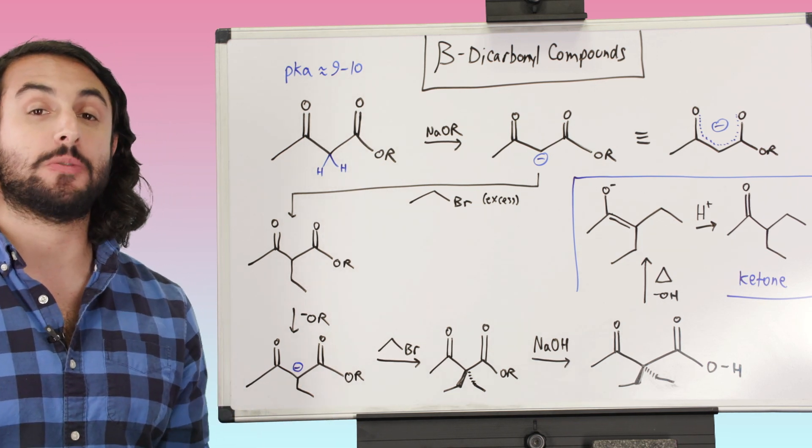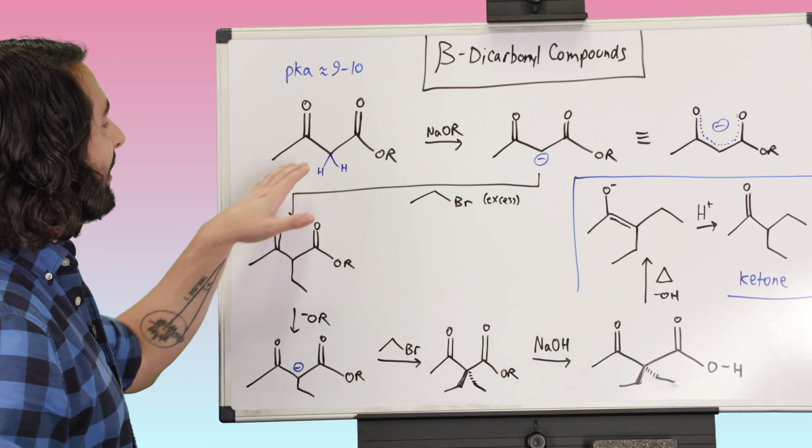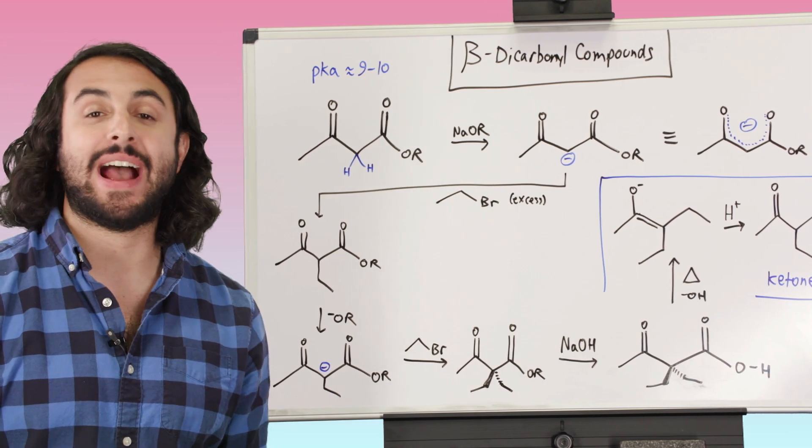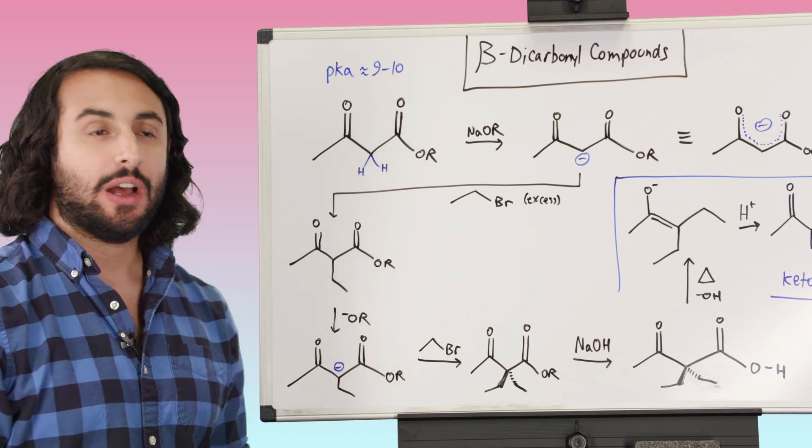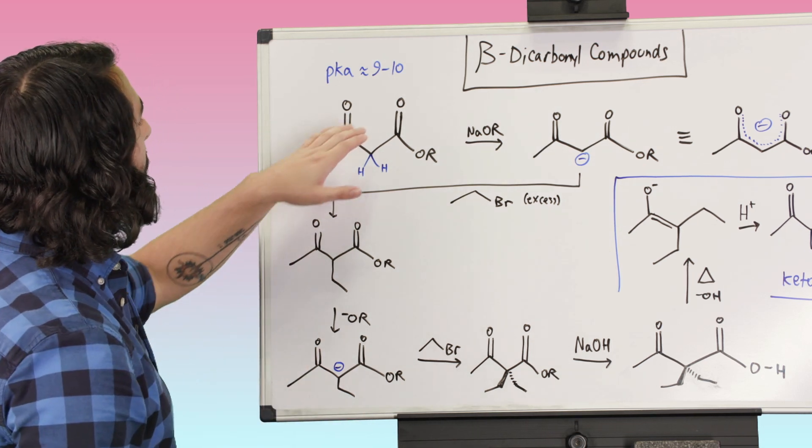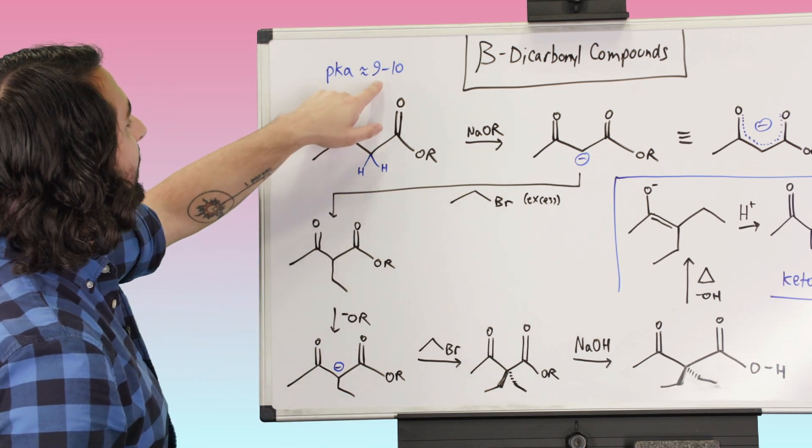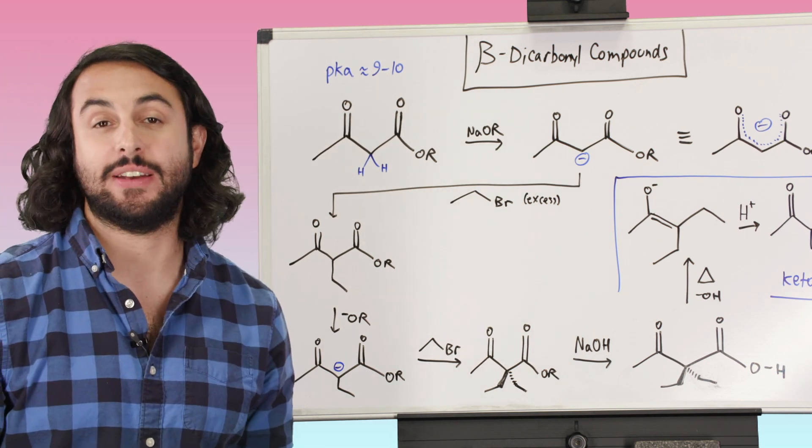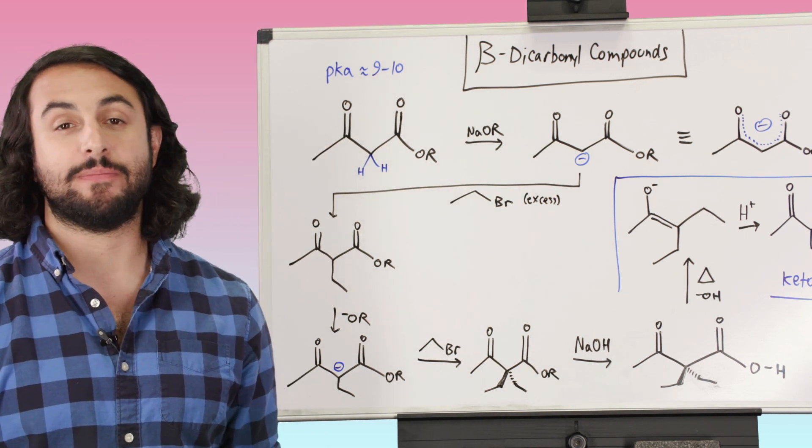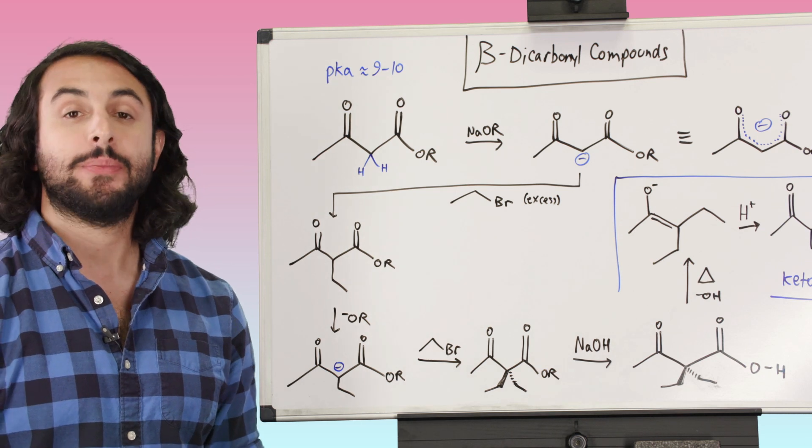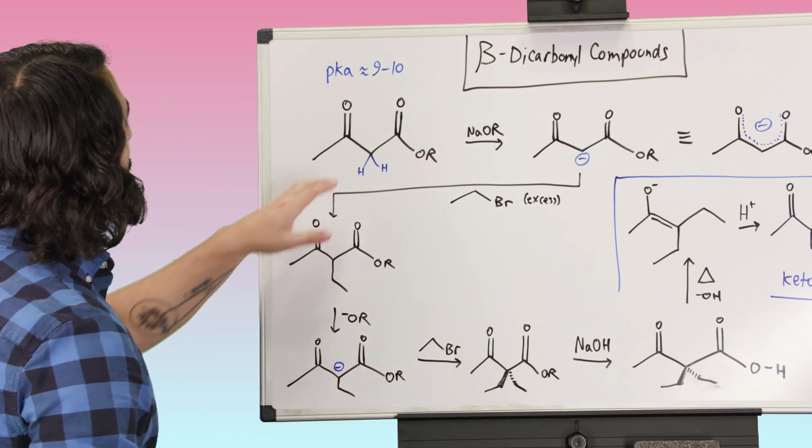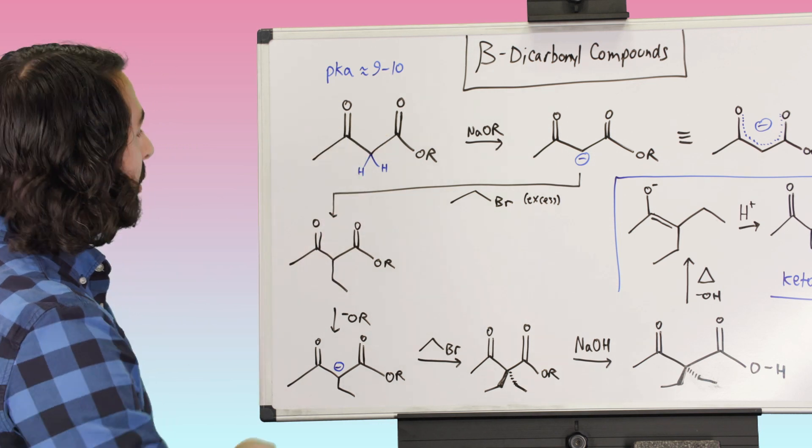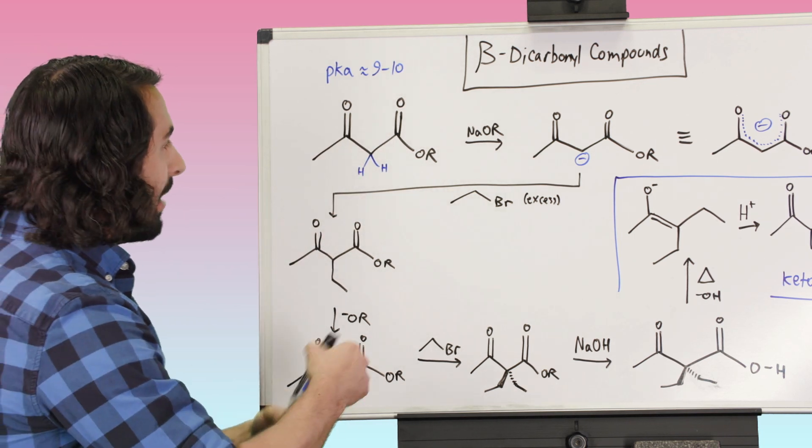They become much, much more acidic, whereas an alpha proton in an aldehyde or ketone is usually pKa around 19, somewhere in that vicinity. For a beta-dicarbonyl compound, we're jumping down to a pKa of around 9 or 10. So that's around 10 orders of magnitude. That's a billion or 10 billion times more acidic. So you can see it's a very dramatic effect when we have a beta-dicarbonyl compound.